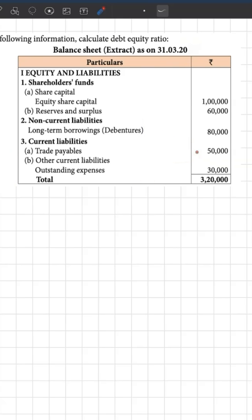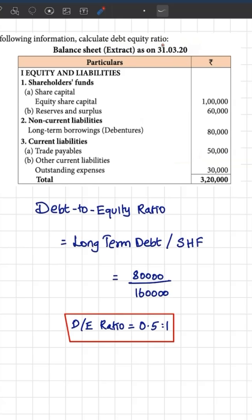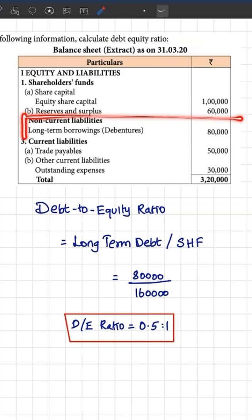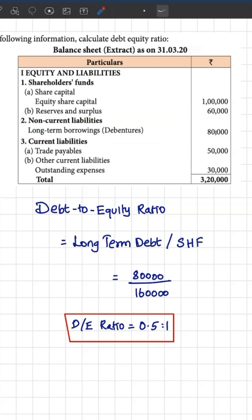Our task is computing the debt-to-equity ratio. The formula is basically long-term debt divided by shareholders' funds. When we say long-term debt, they are basically non-current liabilities.